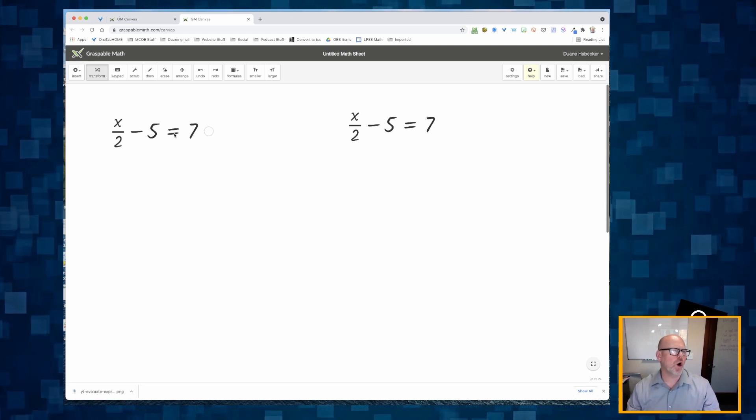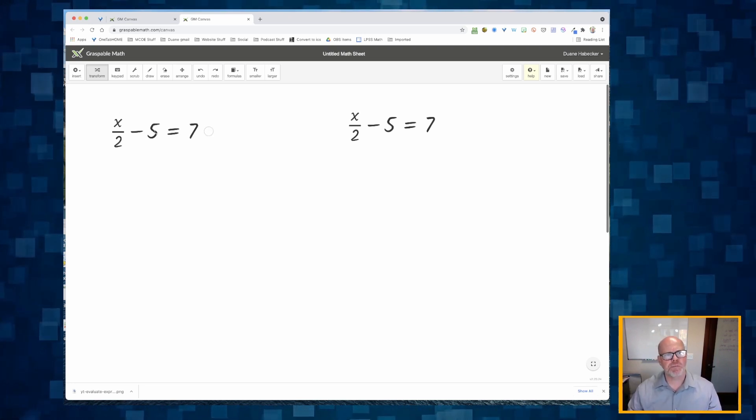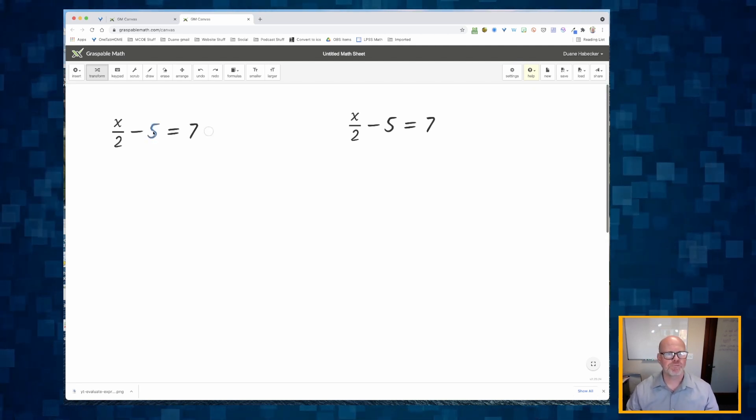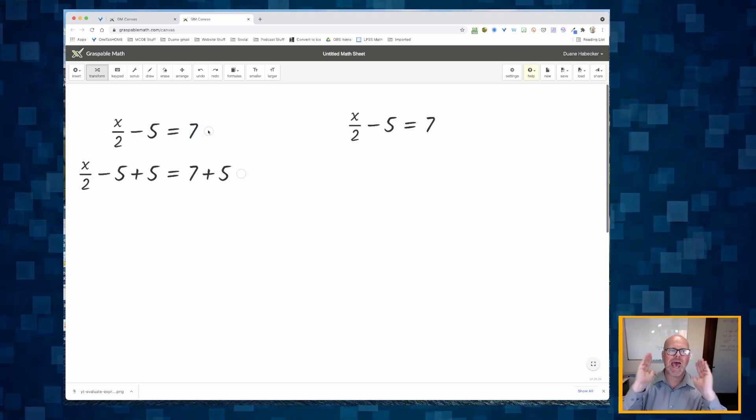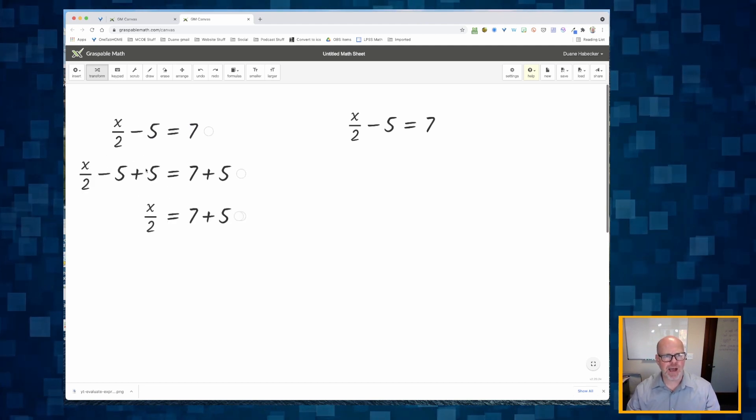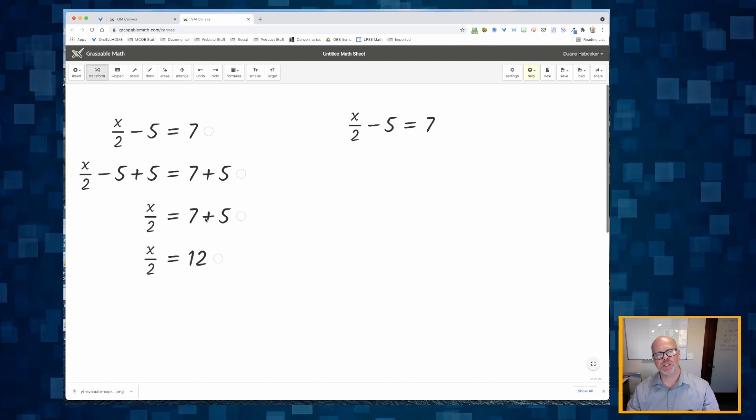So the first thing I'm going to do, what could I do? Well, let's take care of this minus 5. I'm going to hold down the shift key. I'm going to select that 5 and I'm going to move it to the right side, which really means I'm adding 5 to both sides. And that makes the 5 go away on the left side. And then 7 plus 5 gives me 12.